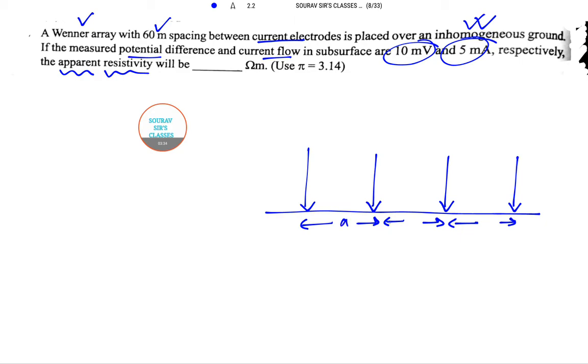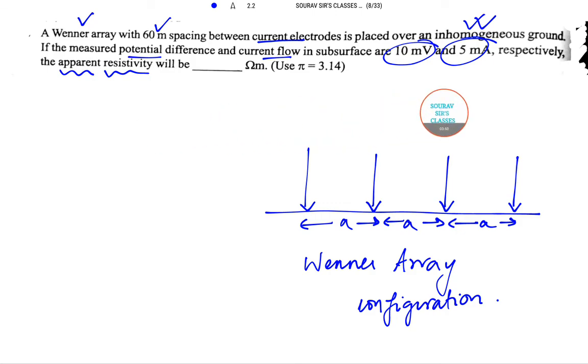So A, A, A, A. What this figure shows? It shows the Wenner array configuration. Now, what has been provided to us? Things that has been provided are: